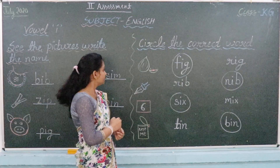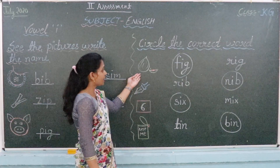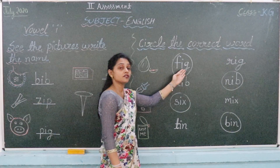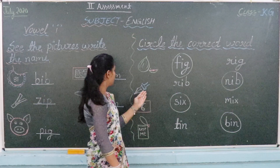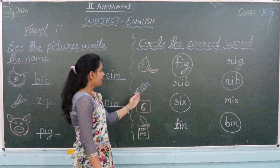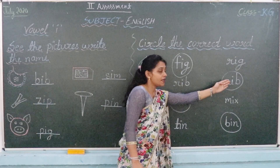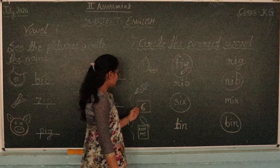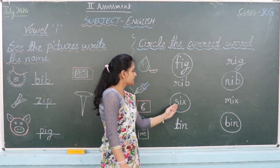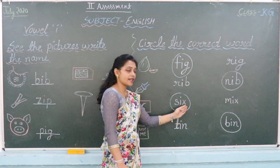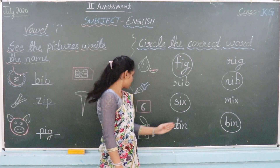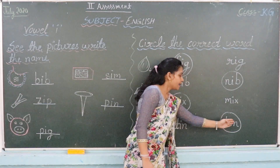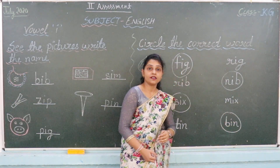We repeat this. Fig — F, I, G. Nip — N, I, P. Six — S, I, M. Wind — B, I, M — Bin. When you spell it, then you can do it.